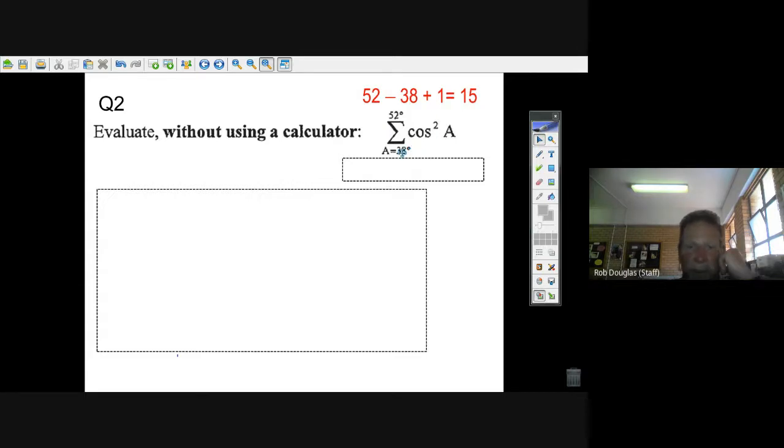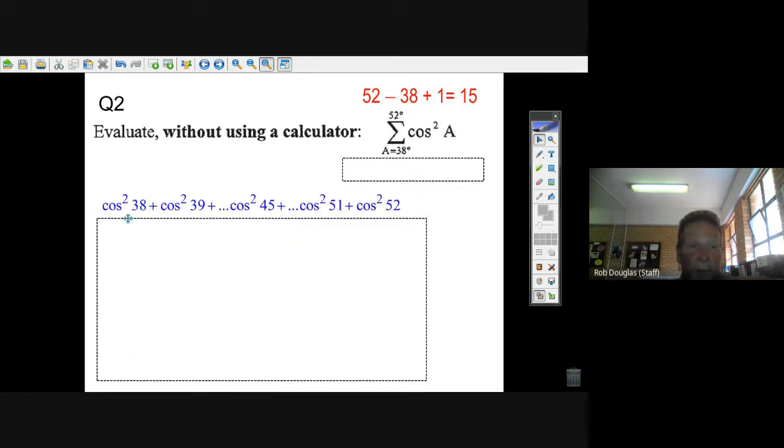There are 15 different things that are added in here, there are 15 terms. Now all you do is take 38 degrees and put it in instead of A, so the first term is the cosine of 38, cosine squared of 38 degrees.